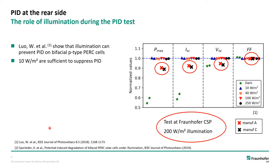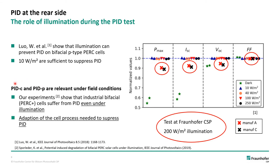Opposite to these findings, our tests at Fraunhofer CSP show that degradation can occur even when simultaneous illumination is used. These tests were performed on industrially produced bifacial PERC cells made from P-type monowafers — the same cell type Luo used in his tests. This means that PID of the corrosive type and PID of the depolarization type are relevant under field conditions, since our results show that simultaneous illumination does not automatically prevent potential induced degradation. Interestingly, since all these results were achieved from the very same cell type, it is possible to suppress PID under illumination, and this is achievable by adapting the cell process.